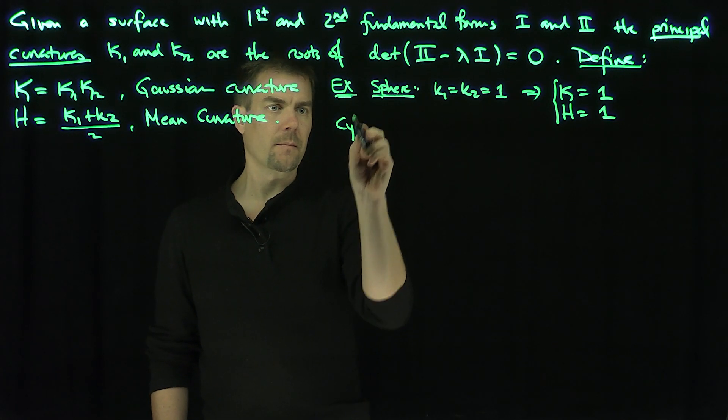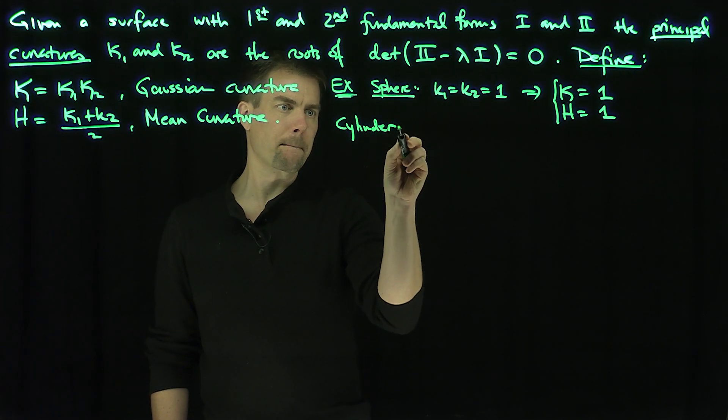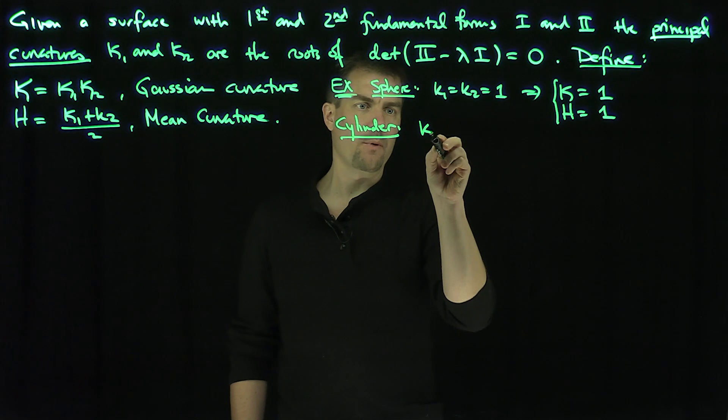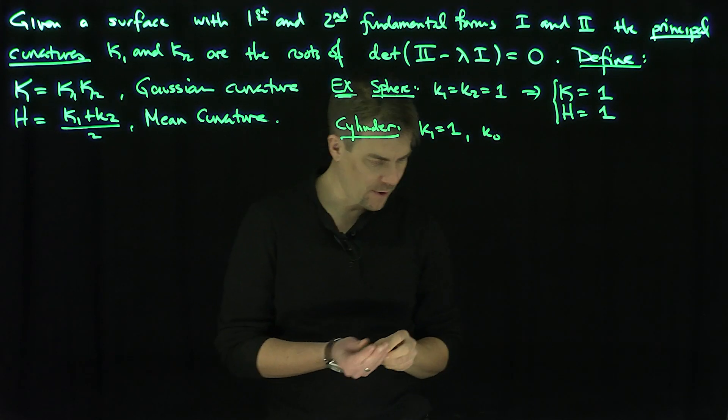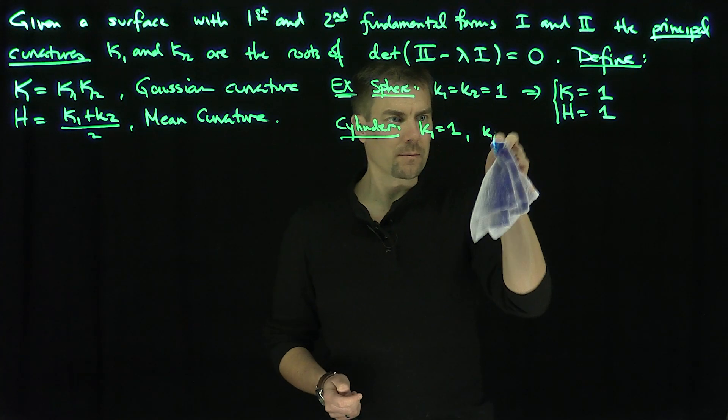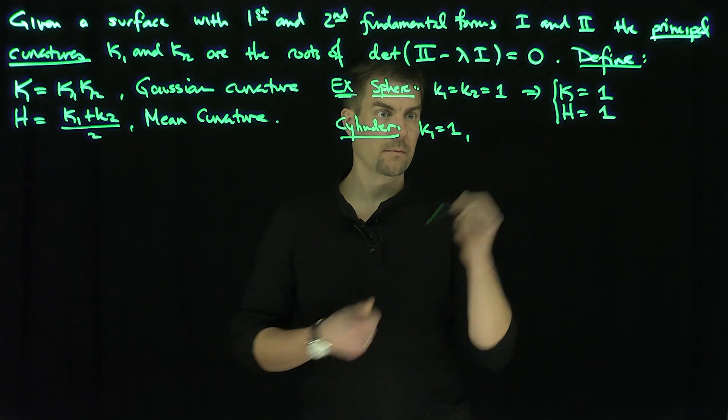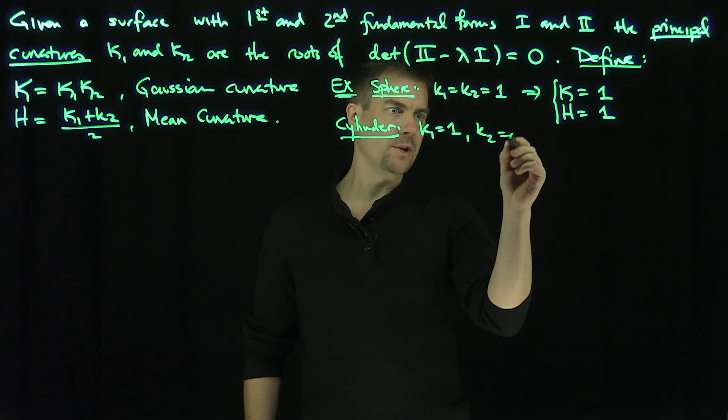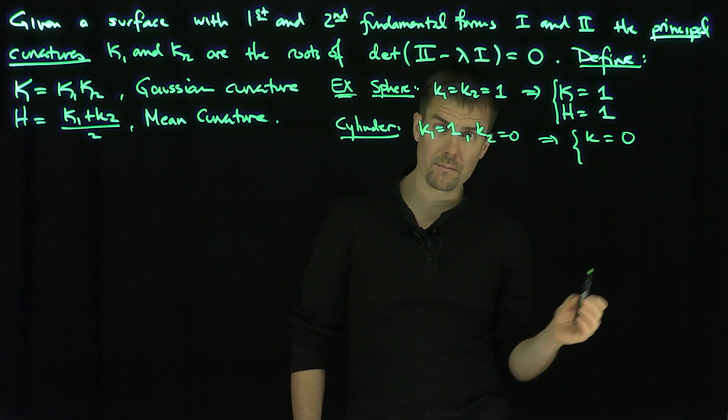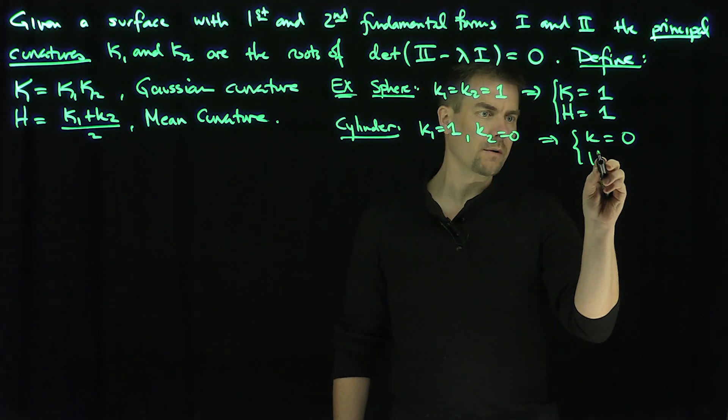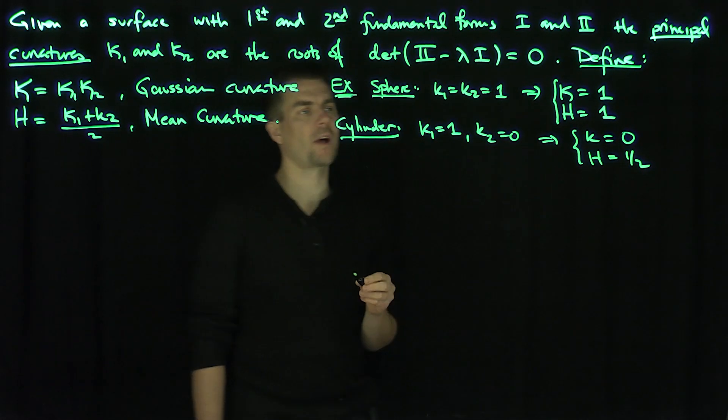If we have a cylinder, we have kappa 1 is equal to 1 and kappa 2 is equal to 0. And that implies that k, the Gaussian curvature, is 0. But the mean curvature is equal to 1 half, interestingly enough.